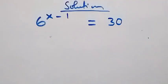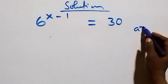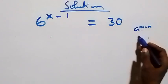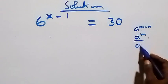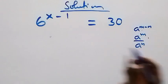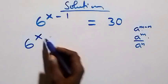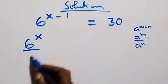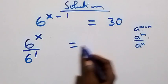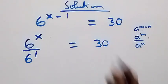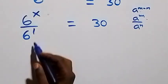Here we follow the law of indices. When we have a raised to power n minus m, this is the same thing as a raised to power n over a raised to power m. So this becomes 6 raised to power x over 6 raised to power 1, and equals 30 on this side.